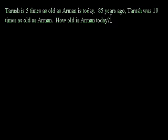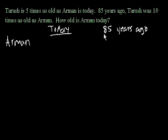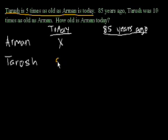Let's see if we can tackle this — quite an interesting problem. I think it might be useful to do one of those charts like we did in the first video presentation. We're trying to solve for how old is Armand today. So let's say Armand, and we're going to have 'today' and '85 years ago' as our two time periods. Armand and Tharoosh. We're trying to solve for how old Armand is today, so let's just make that x for simplicity. Tharoosh is five times as old as Armand today, so if Armand is x, that tells us that Tharoosh is going to be 5x.